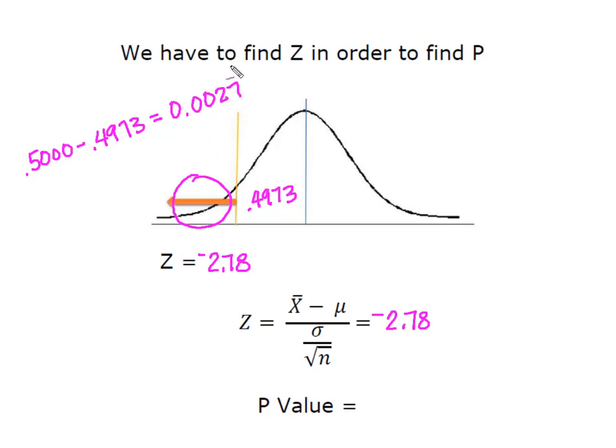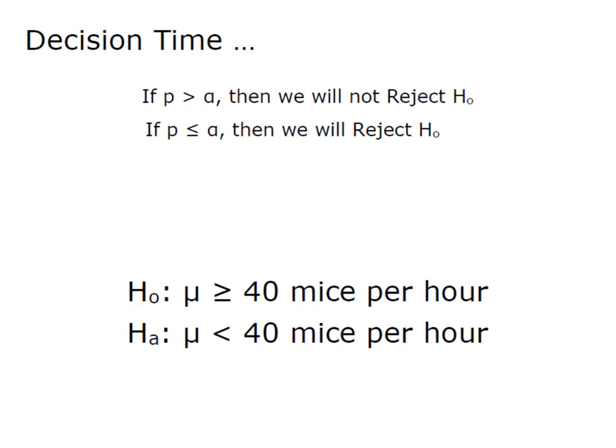And so now I have my P-value of 0.0027. And now I can make my decision. Remember that under a P-value approach, if our P-value is greater than alpha, then our decision will be do not reject H₀. But if P is lower, less than or equal to alpha, then we will reject H₀. Remember, when P is low, H₀ must go.